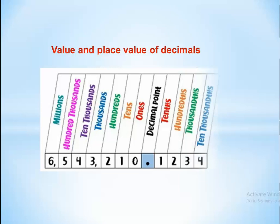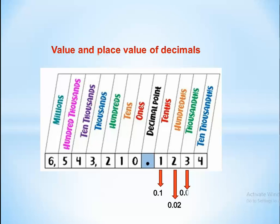Let's revise place value. We know that after the decimal point, the first place is tenths — like 0.1, because 1/10 = 0.1. The second place is hundredths — 2/100 = 0.02. The third place is thousandths — 3/1000 = 0.003. The fourth place is ten-thousandths — 4/10000 = 0.0004.